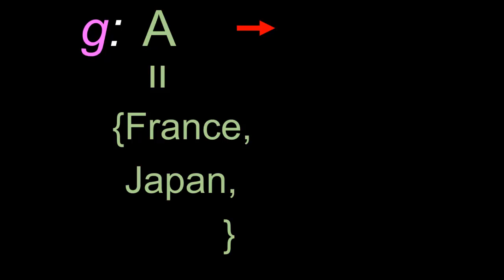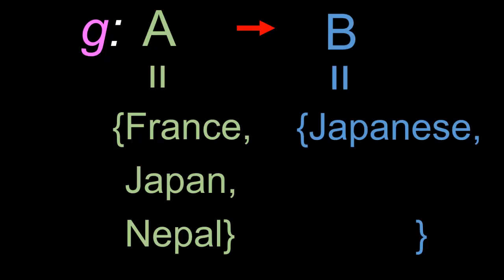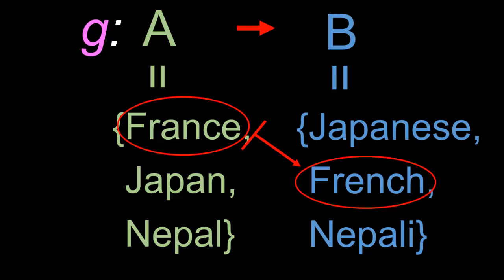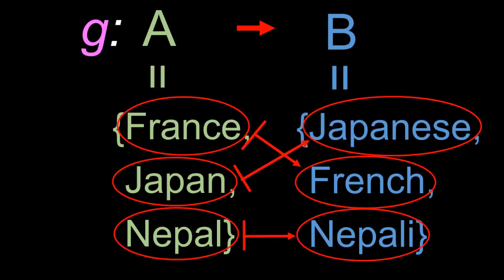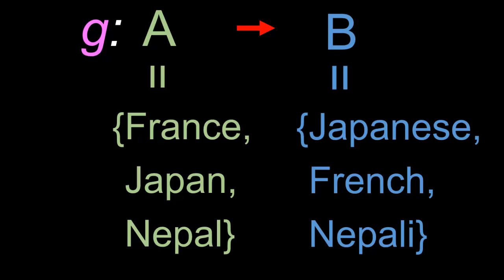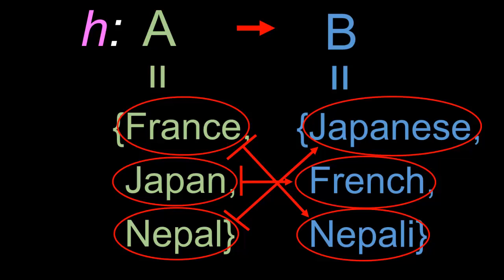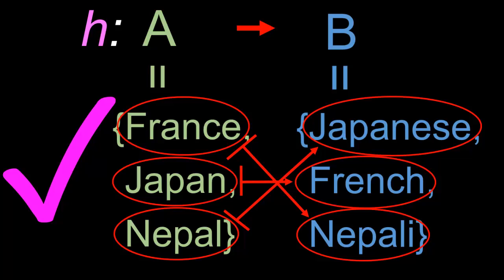Let's look at some examples. Suppose we have a function g with domain A consisting of France, Japan, and Nepal, and co-domain B consisting of Japanese, French, and Nepali. If g is a function that makes sense, it would naturally map France to French, Japan to Japanese, and Nepal to Nepali — g simply maps each country to its national language, so g is indeed a function. In contrast, consider the function h with the same domain A and co-domain B. The function h maps France to Nepali, Japan to French, and Nepal to Japanese. This doesn't seem to make any sense at all — we seem to be randomly matching each country to some language. But yet, h is also a completely proper function.